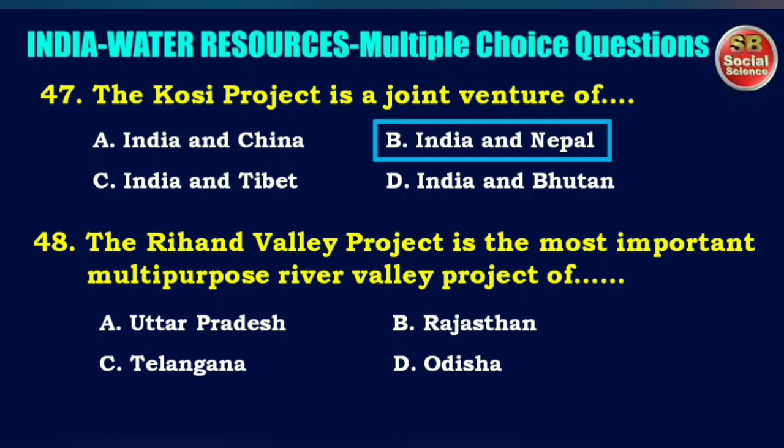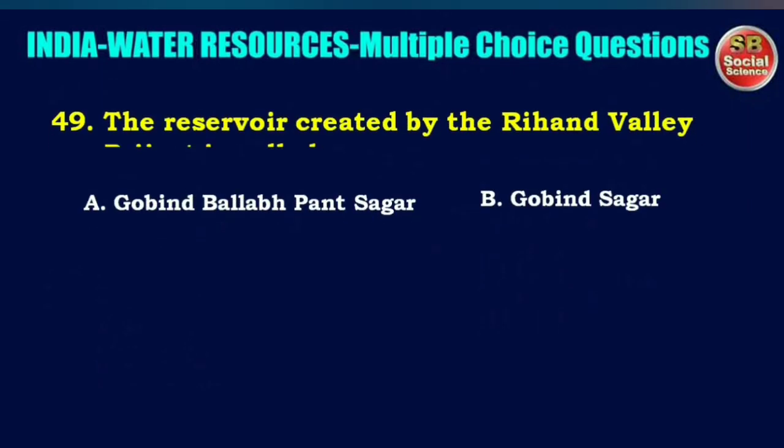This is the most important multi-purpose river valley project of — options are Uttar Pradesh, Rajasthan, Telangana, or Madhya Pradesh. The right answer is option A: Uttar Pradesh.